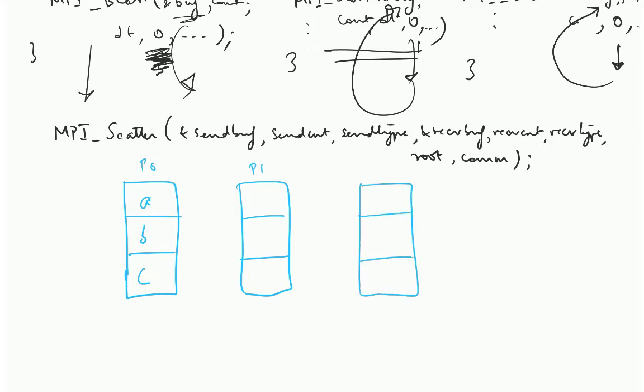So what happens at the end of scatter? This is the buffer with P0, this is the buffer with P1 and P2. At the end of scatter, if root is rank 0 and this is the buffer it provides, then at the end you are going to have B over here and C over here.